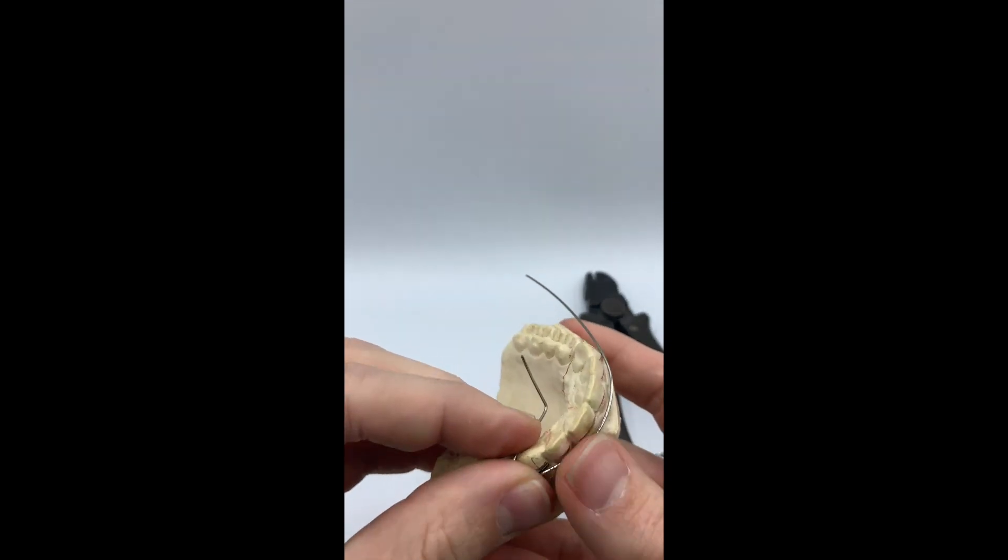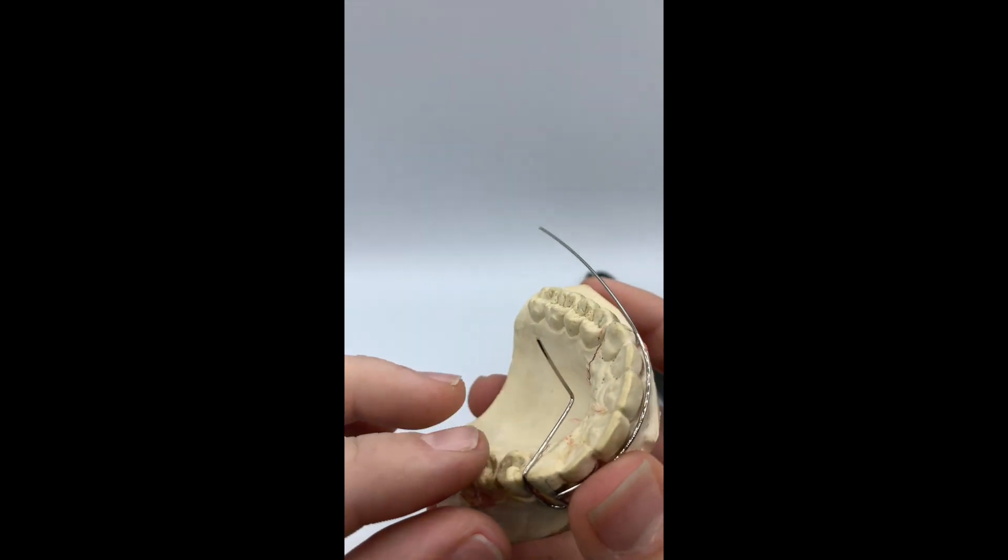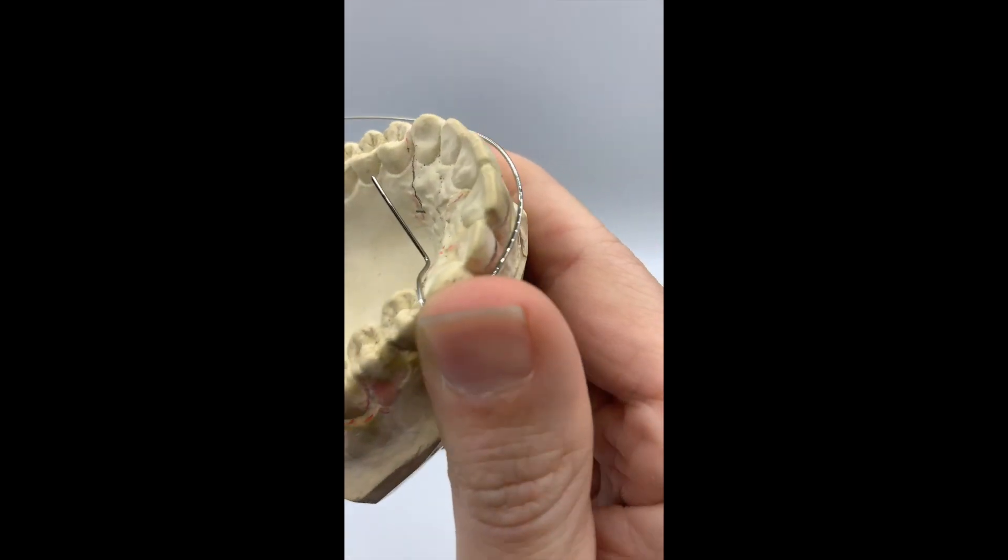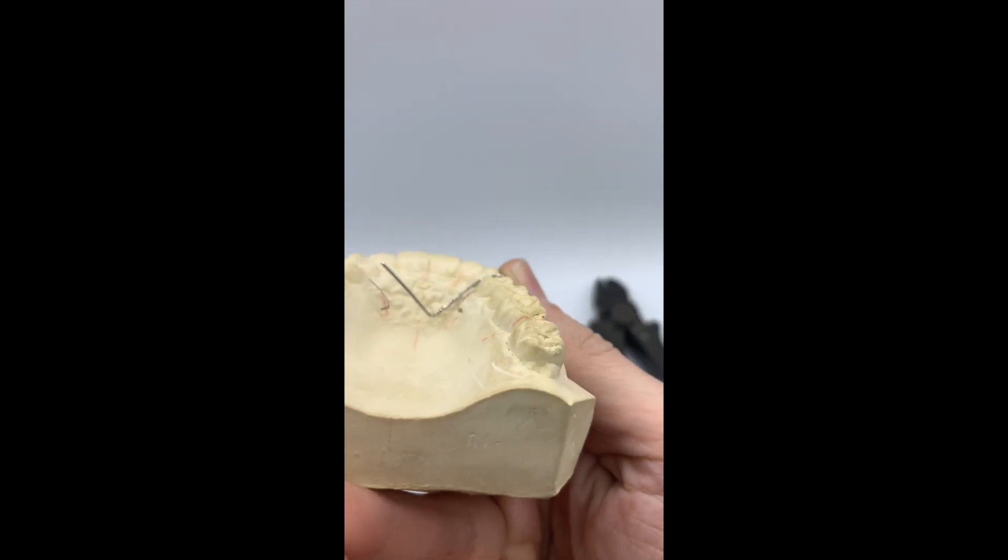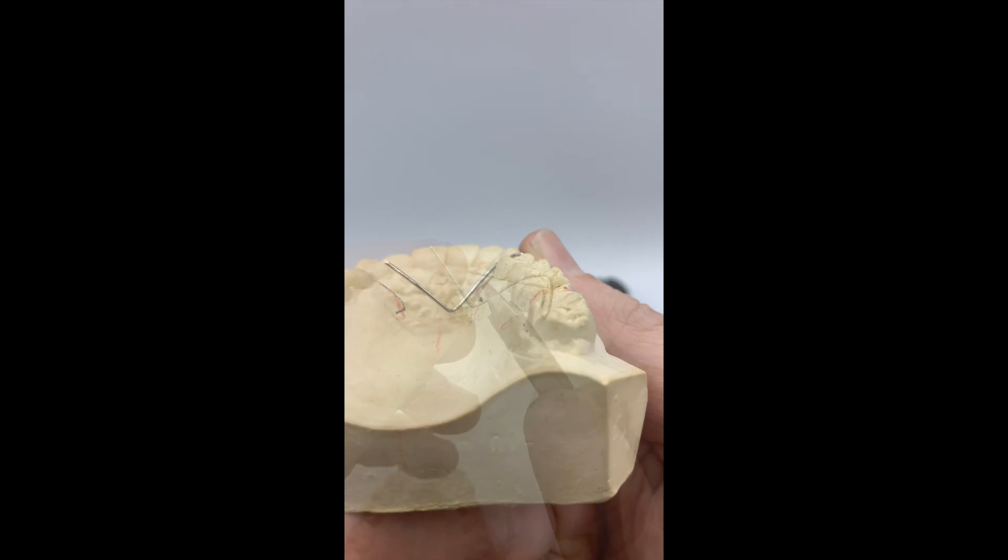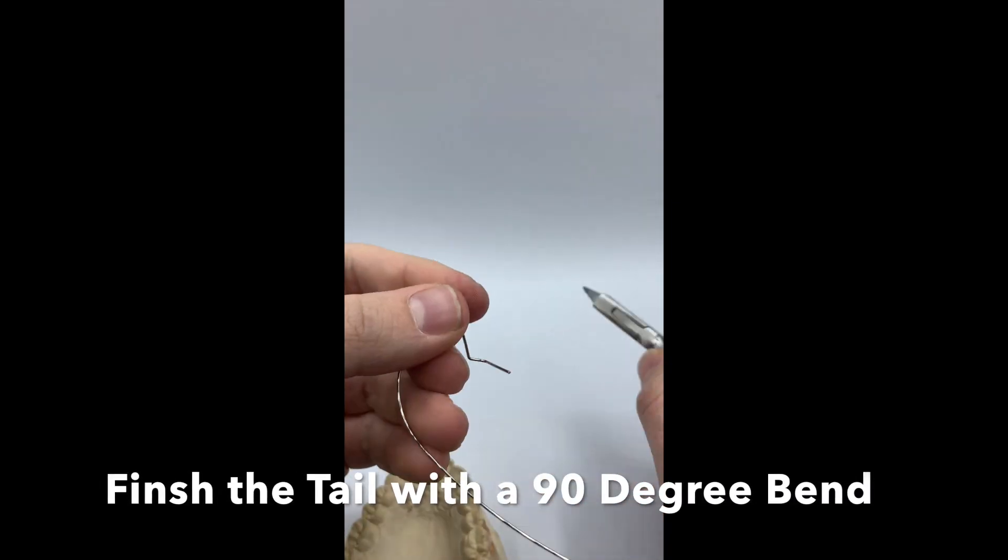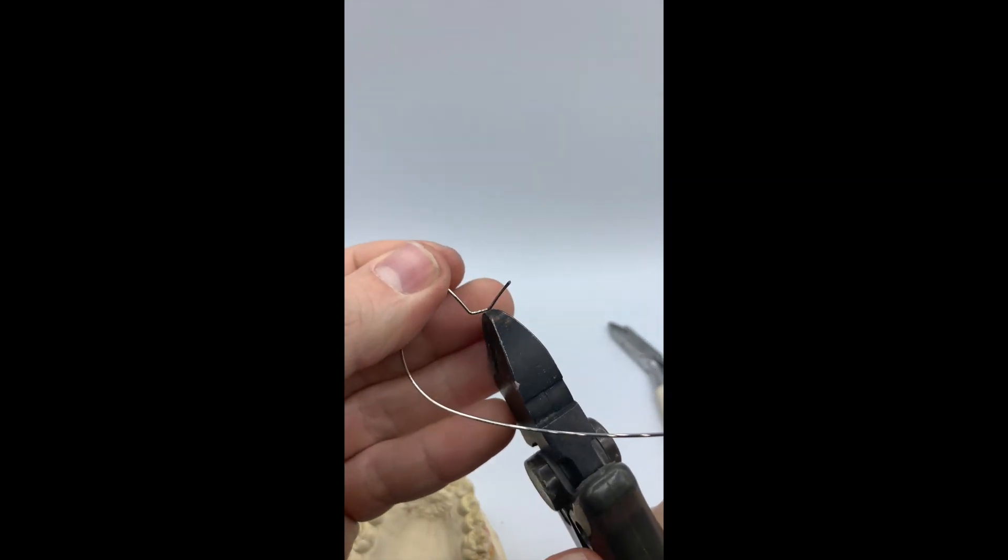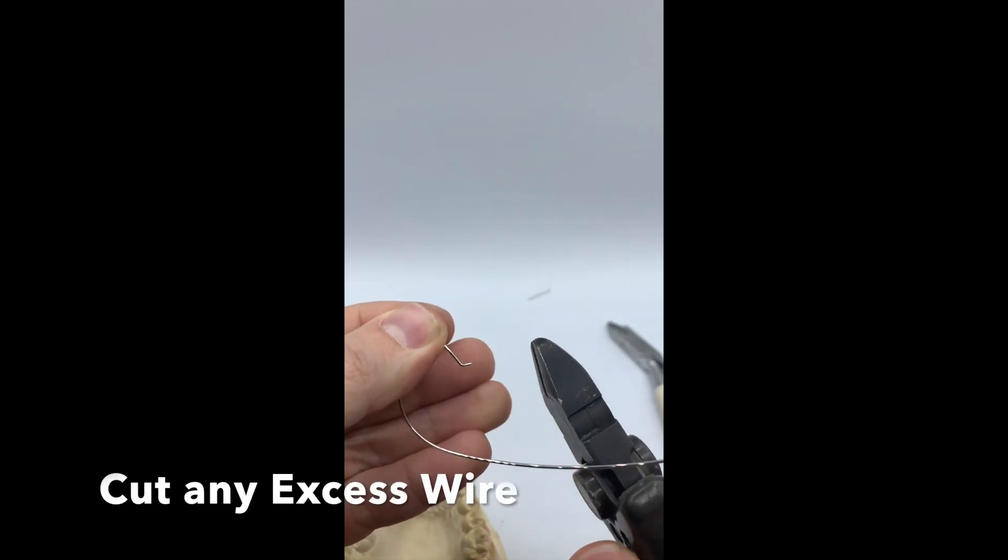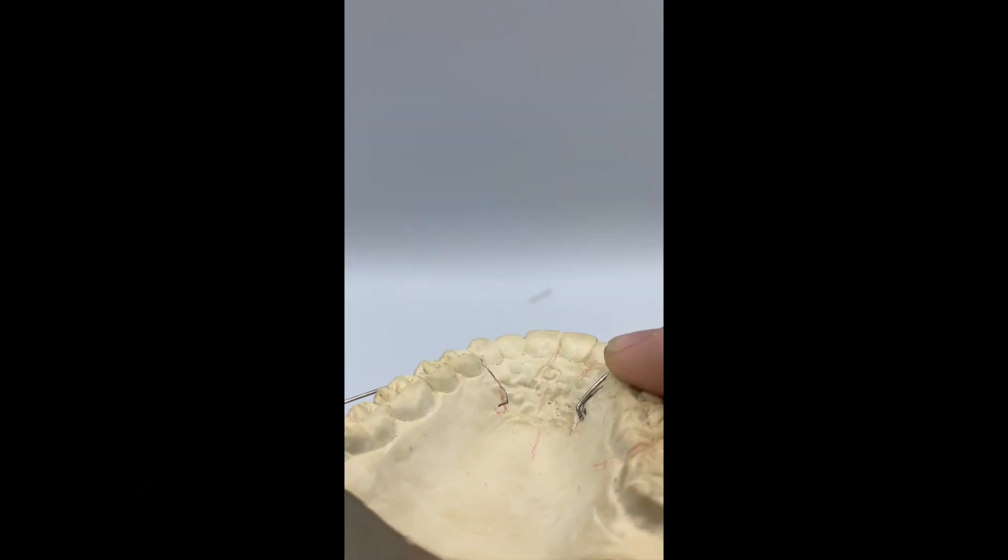If you bend a wire too much in one spot, back and forth, the wire can break. Think of this as like a paper clip. When you have the wire bent into the pallet, a little bit above the tissue, you now want to bend a 90 degree back towards the distal. You want to cut any excess wire with a wire cutter. Be careful, the wires will fly.